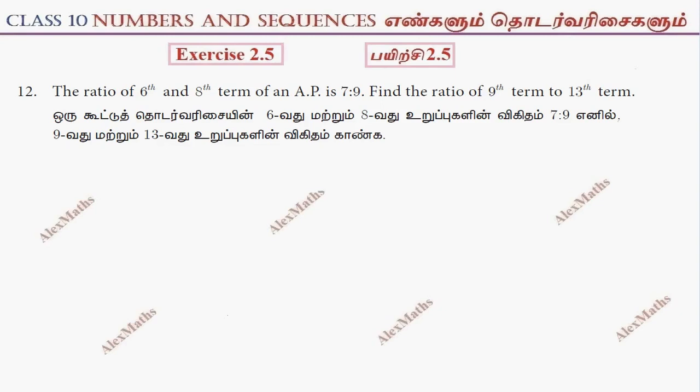Hi students, this is Alex here. X is 2.5, question number 12. The ratio of the 6th and the 8th term of an AP is 7 is to 9.